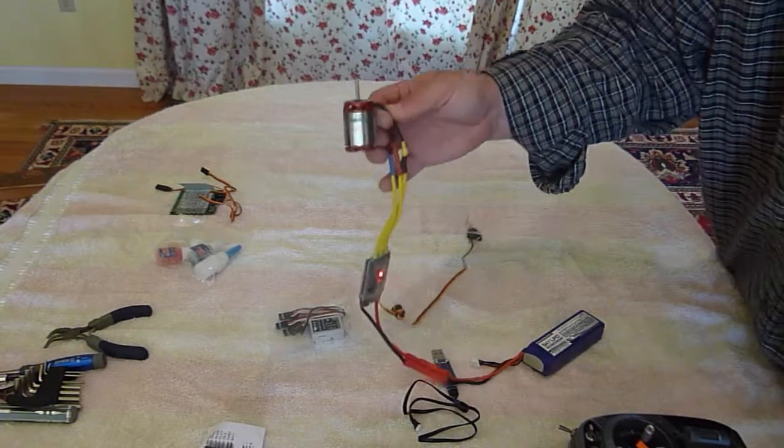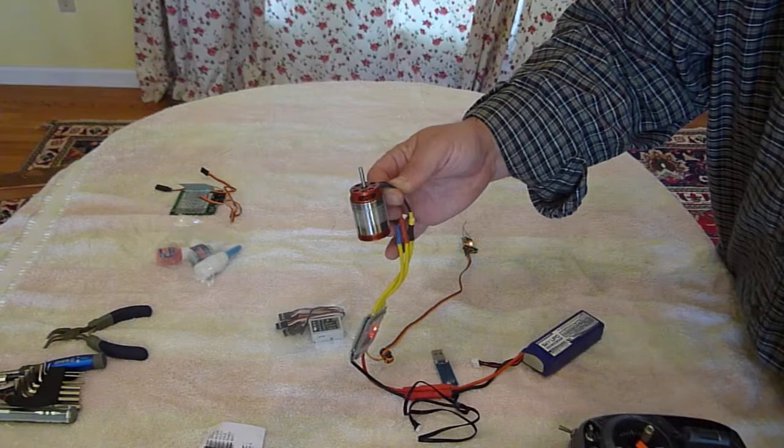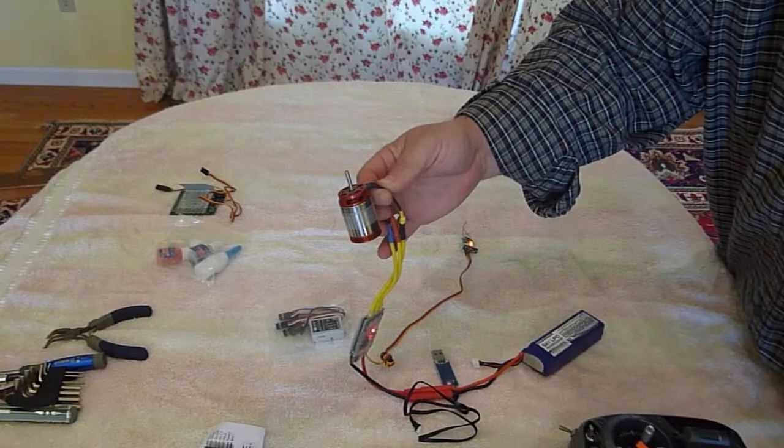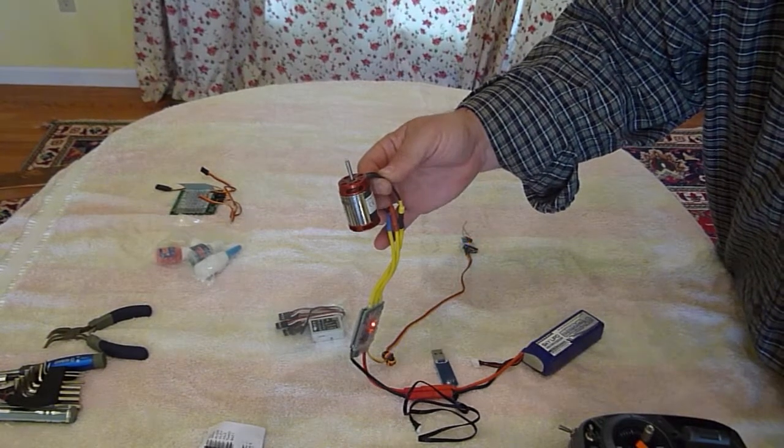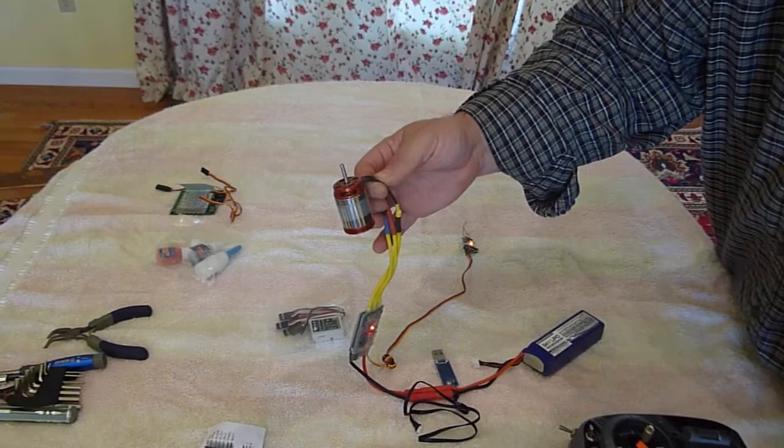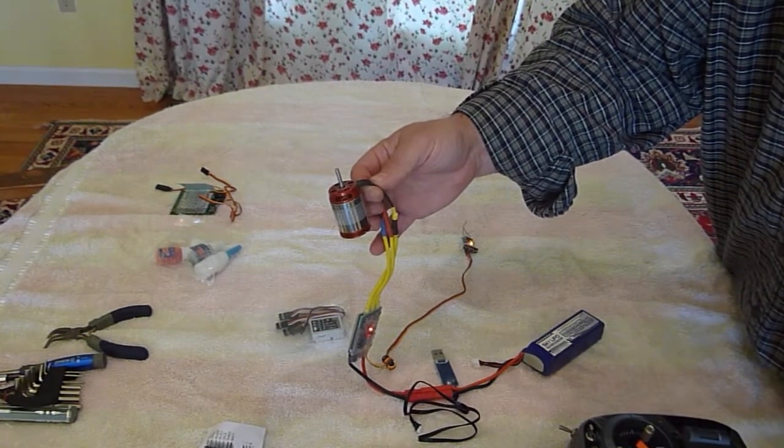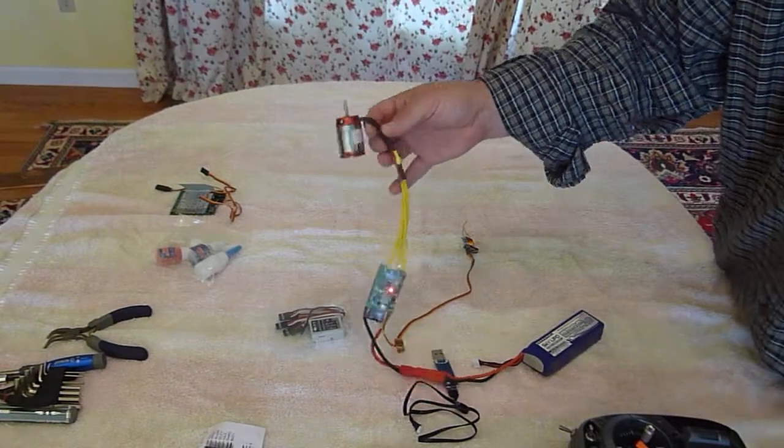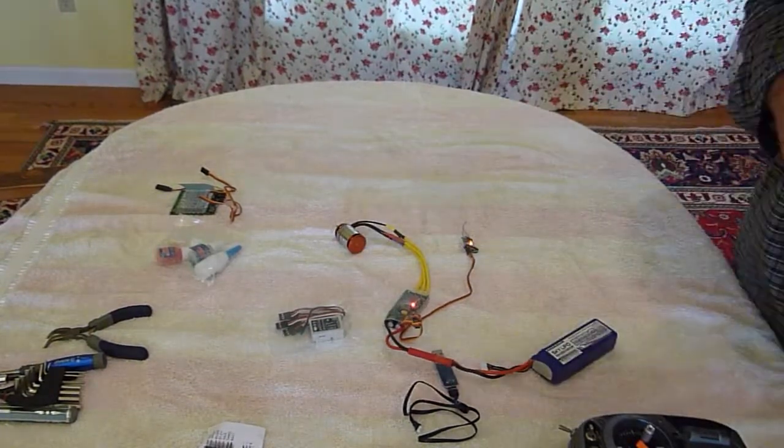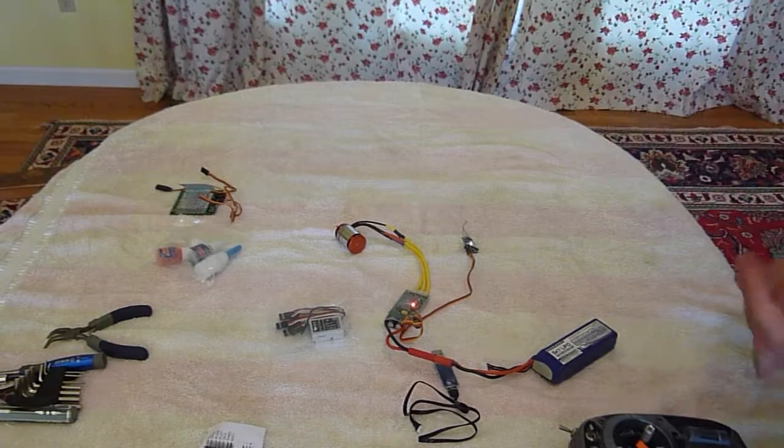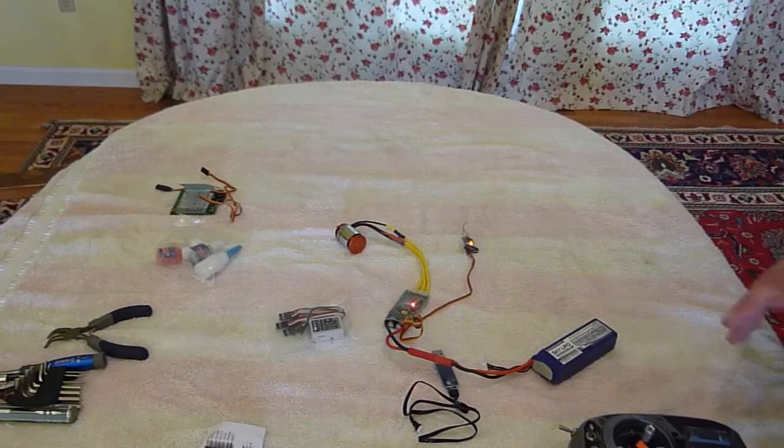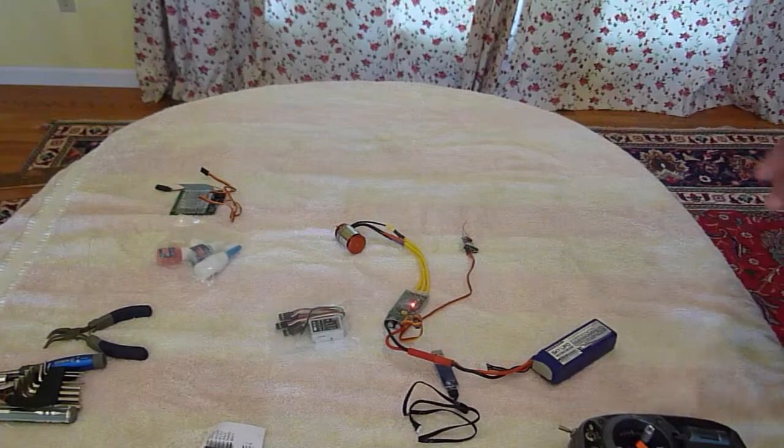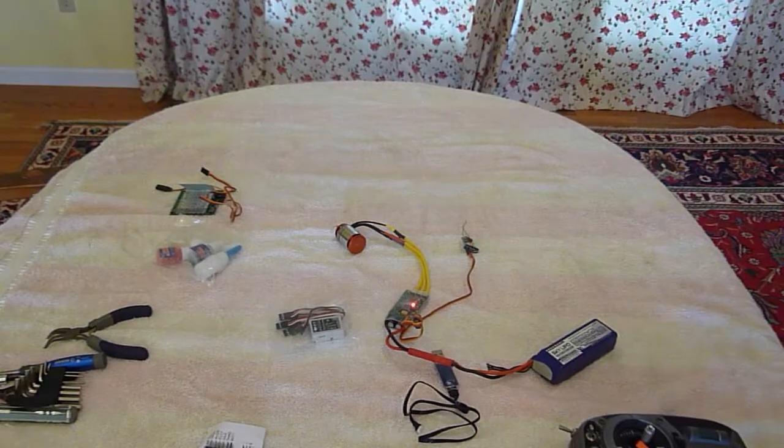So I've got full throttle and you'll see how it spools up nice and slowly. So that was full throttle. Very nice and smooth. So that's good. That's what I wanted. Got the throttle calibrated. Got the start mode set. The motor's working good. Starting up nice and smooth. So now let's move on to the gyro.